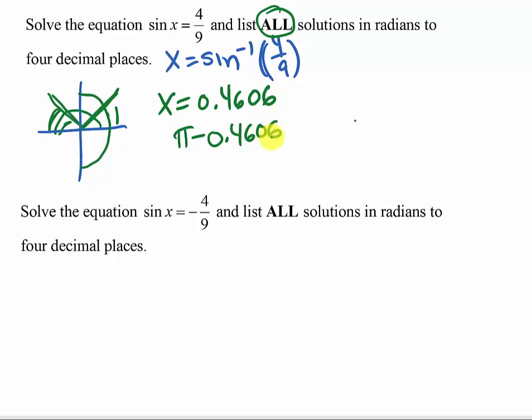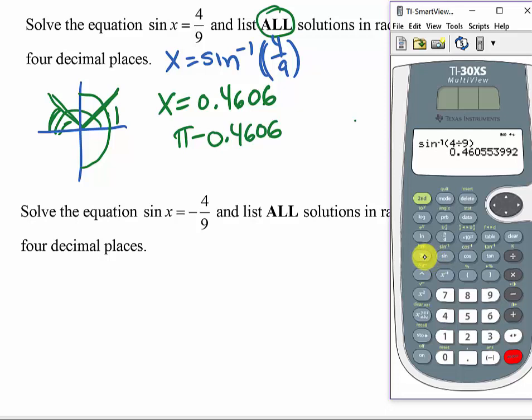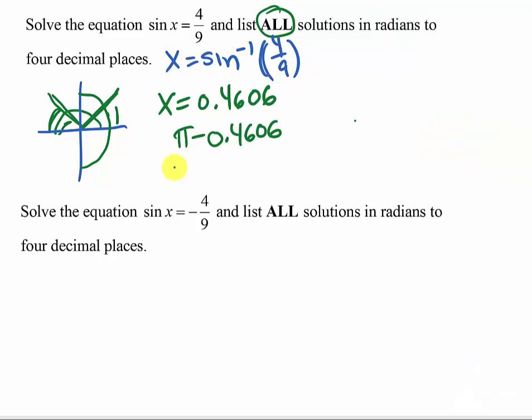I'm going to use the value that's in the calculator that's not rounded for more accuracy. So I'm going to do π minus, using that answer from before, and get 2.6810. That's to four decimal places. So x = 2.6810.